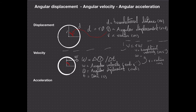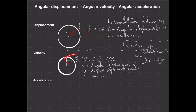Angular acceleration is the rate of change of angular velocity. If this object was rotating down a hill, for example, it would be speeding up — it would be accelerating. The rate at which it rotates through itself would increase, giving an increase in angular velocity and therefore angular acceleration. It's usually given the symbol alpha, and is measured in radians per second per second — or radians per second squared, similar to meters per second squared in kinematics.